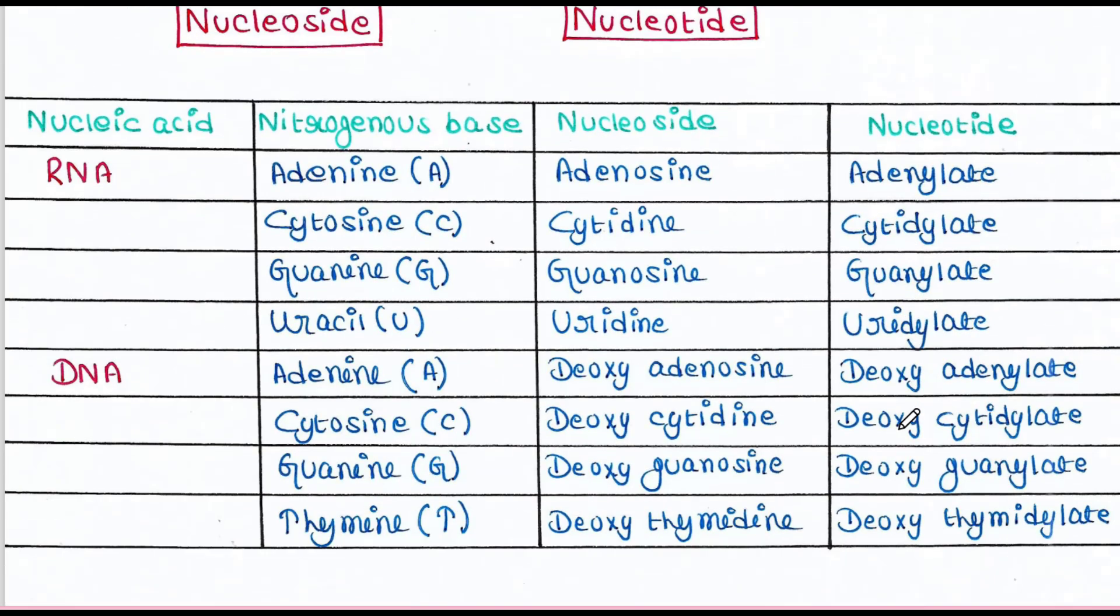Here is the list. So in case of RNA, for the nitrogenous base adenine, the nucleoside is adenosine and the nucleotide is adenylate. For C, the nucleoside is cytidine and nucleotide is cytidylate. For G, the nucleoside is guanosine and the nucleotide is guanylate. For uracil, the nucleoside is uridine and the nucleotide is uridylate.